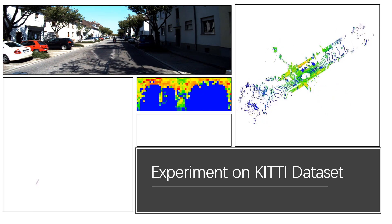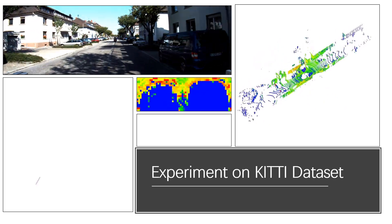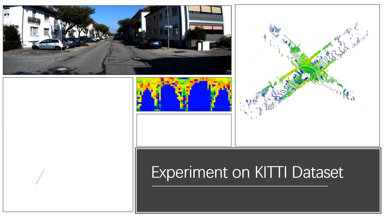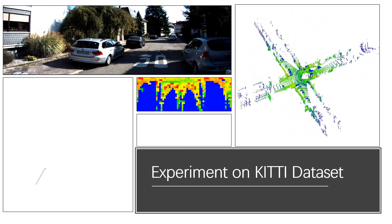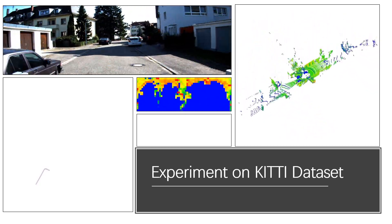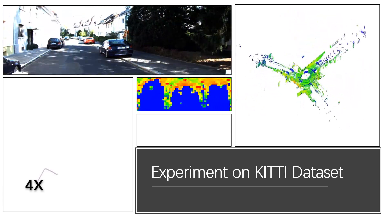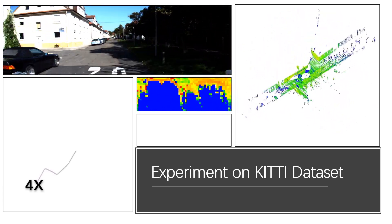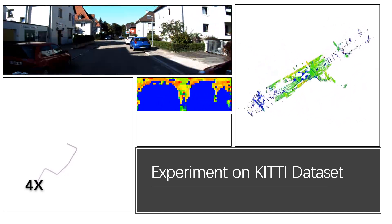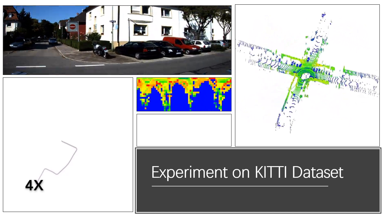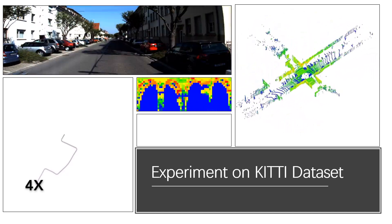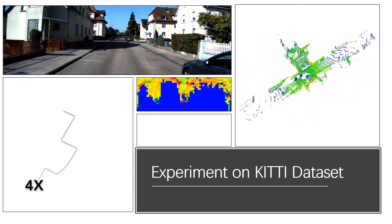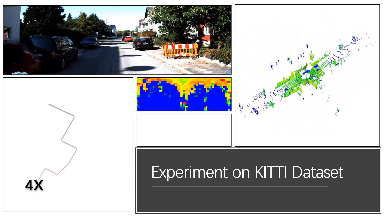Loop closure detection is an essential component of simultaneous localization and mapping. A 3D laser scanner is often used to identify revisited places due to its viewpoint and illumination invariant properties. Existing works on LiDAR-based loop closure detection leverage matching of local or global geometrical-only descriptors, and the intensity reading is ignored.